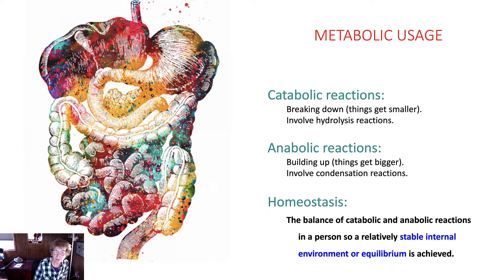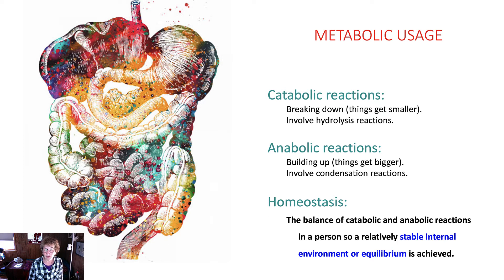If your blood sugars go up, your body will produce insulin to bring it down. If your blood sugars go too low, then your body will release glucagon that targets the liver to release glucose and bring it back up.